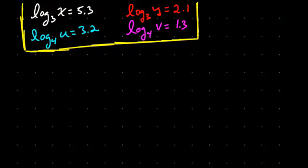In this video, we are going to work through some problems involving the algebraic properties of logarithms. I've got a few statements here. As you can see, log base 3 of x equals 5.3, log base 3 of y equals 2.1, log base 4 of u equals 3.2, and log base 4 of v equals 1.3.